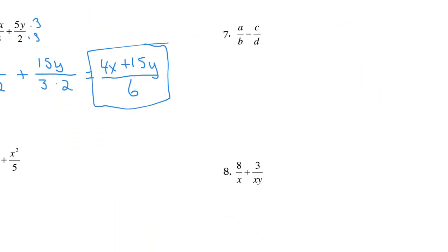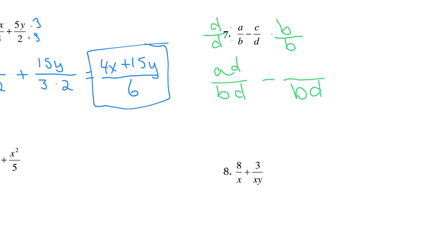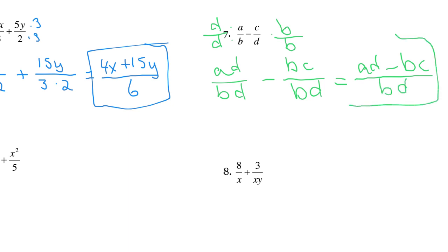Looking at number 7, we have a over b minus c over d. Everything's different, so let's just multiply and make common denominators here. Our common denominator is going to be b times d. To get that, I had to multiply the top and the bottom by d on the left side, and by b on the right side. So the left numerator will be ad and the right numerator will be bc. Now it's just subtraction: ad minus bc, all over bd. Nothing to simplify here — our final answer is ad minus bc over bd.